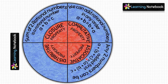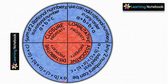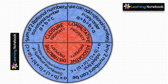The last property is distributive property. In general form it is written as a × (b + c) = a × b + a × c. This is the distributive property of multiplication over addition.